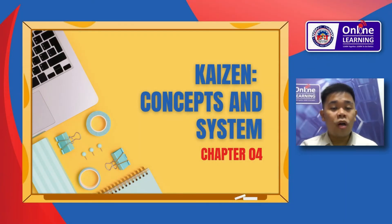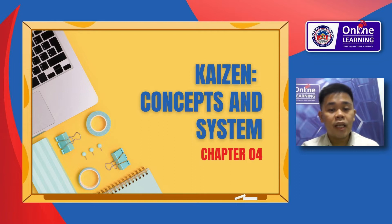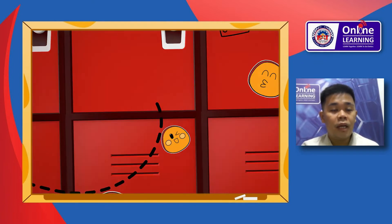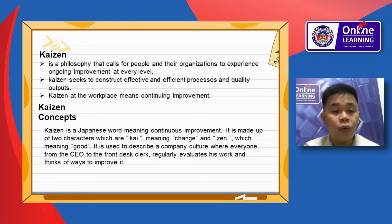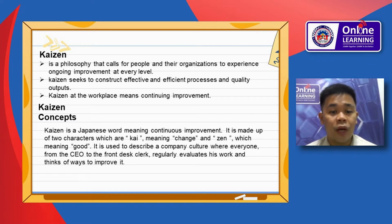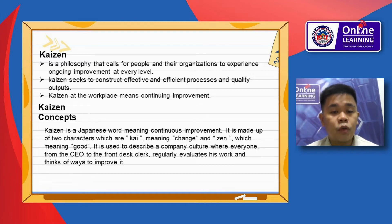For Chapter 4 of the TQM: Kaizen Concept and System. Kaizen is a philosophy that calls for people and their organization to experience ongoing improvement at every level. Kaizen seeks to construct effective and efficient processes and quality outputs. Kaizen at the workplace means continuing improvement.